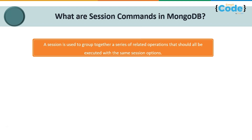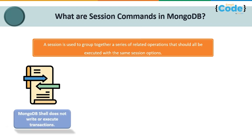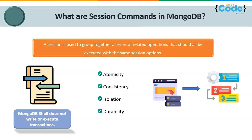A session is used to group together a series of operations that are related to each other, which would be executed with the same session options. The MongoDB shell is not typically used to write and execute transactions — external applications use transactions instead. The application must initiate a session in order for any transaction it performs to be guaranteed with the ACID properties: atomicity, consistency, isolation, and durability.